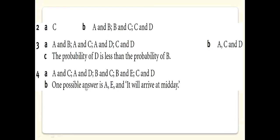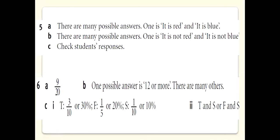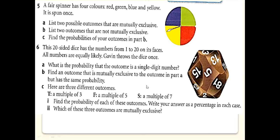One possible answer for part B is 12 or more — there are many valid answers. Now part C considers three outcomes: T is multiples of 3, F is multiples of 5, and S is multiples of 7. For multiples of 3 on a 20-sided die: 3, 6, 9, 12, 15, 18 — that gives 6 outcomes, so the probability is 6 by 20, which is 3 by 10 or 30 percent.